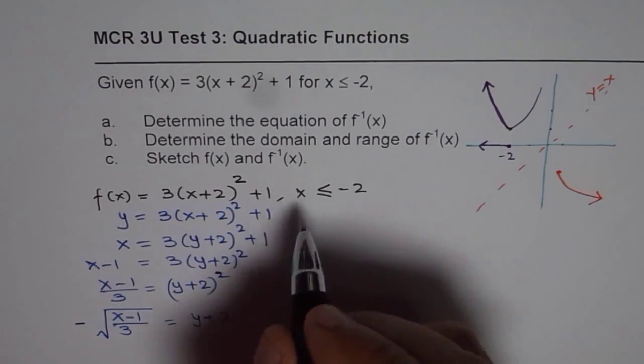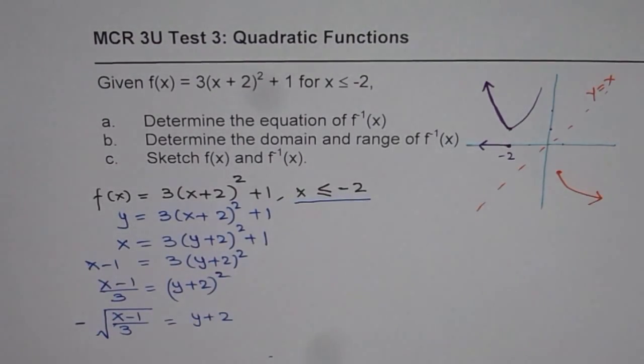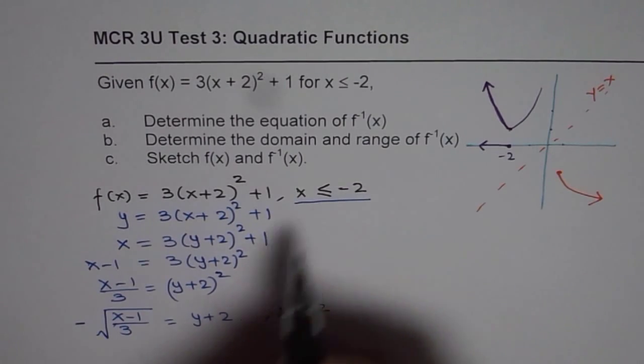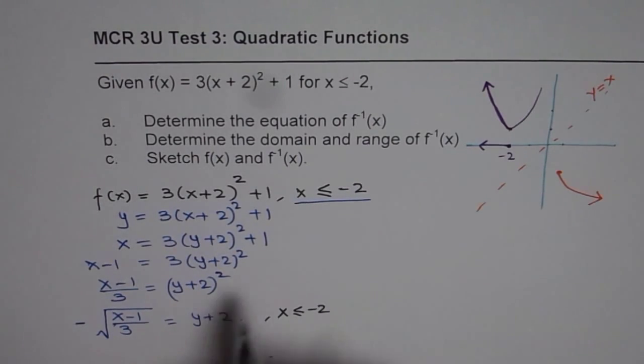Reason is restriction on domain. Do you understand that part? This we did since domain is restricted. Since x is less than or equal to minus 2, that is why we are taking the lower half only. This is very important to understand.